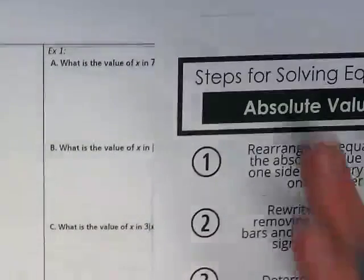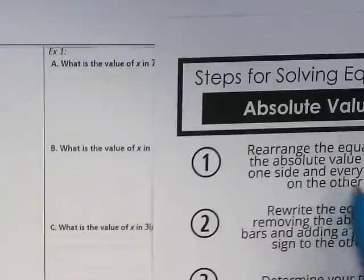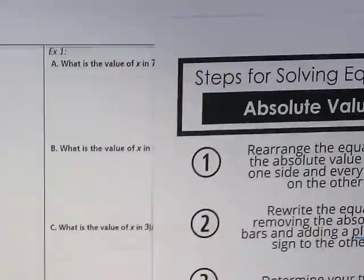I want you to keep an eye on this that we glued in as we're going through our examples today. The first thing that we always want to do when we see an absolute value equation is we want to try to get the absolute value on one side of the equation and everything else simplified on the other.